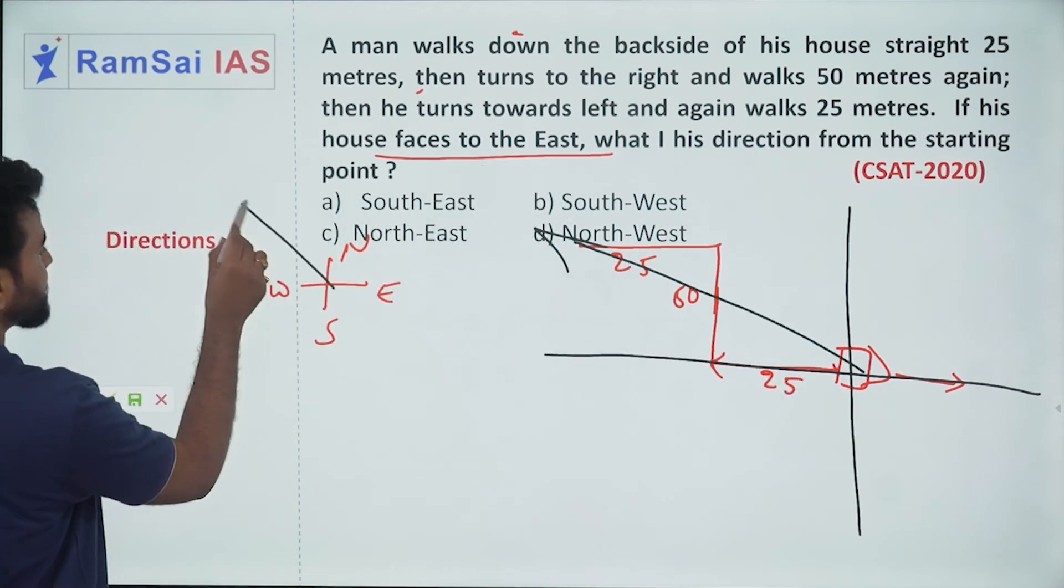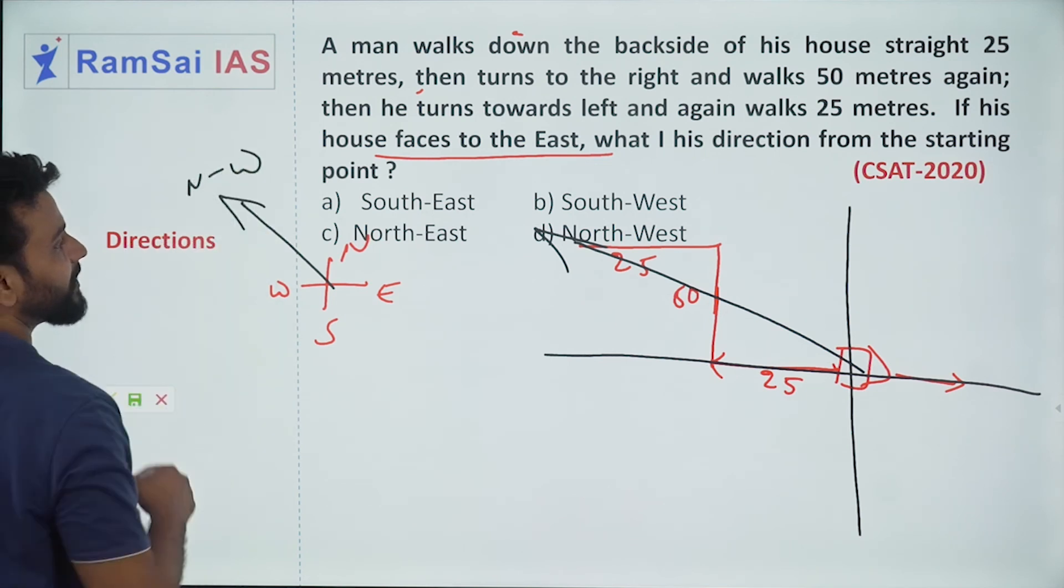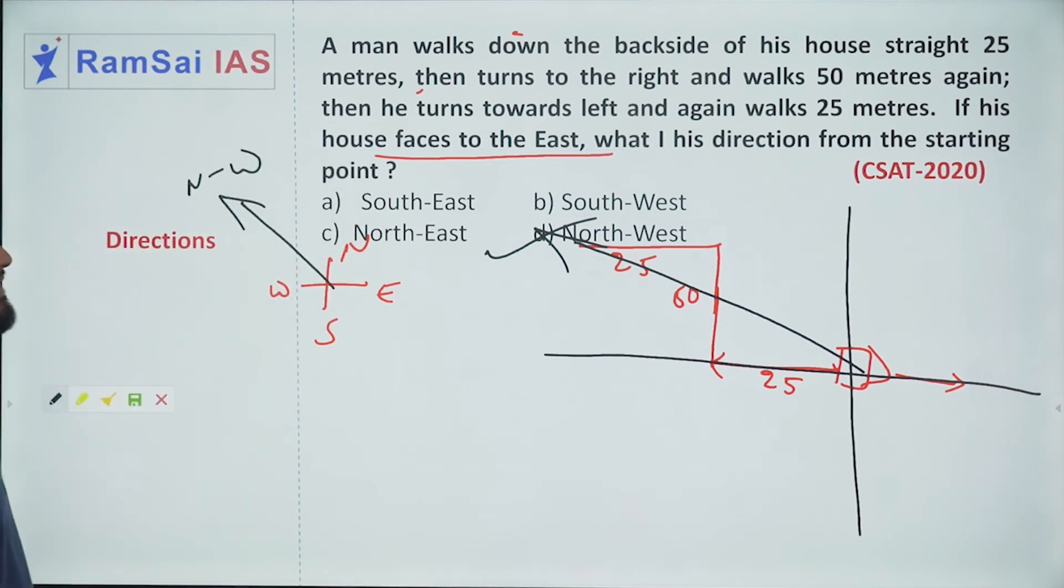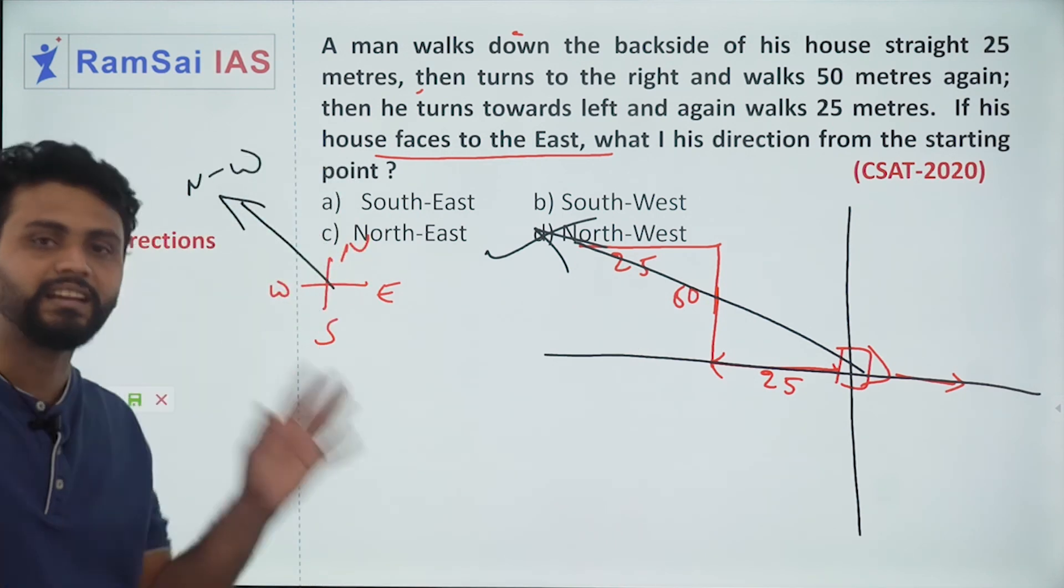He is in this direction, that is northwest. Can you find northwest in options? Yes. Option D. Northwest is the answer. That's it.